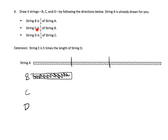Then it says string c is half of string b. So that means I need to take string b, cut it in half, and that is how long string c is. And then the last one — string d is one-third of string c. So that means I need to take string c, cut it up into three pieces, and there is string d.